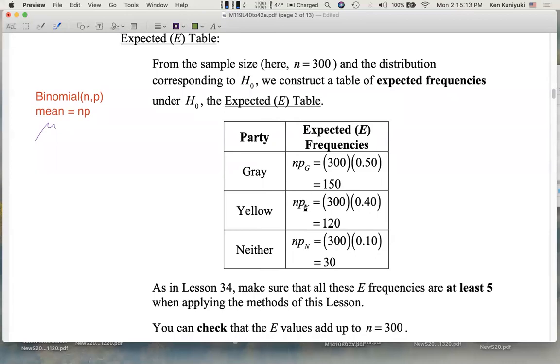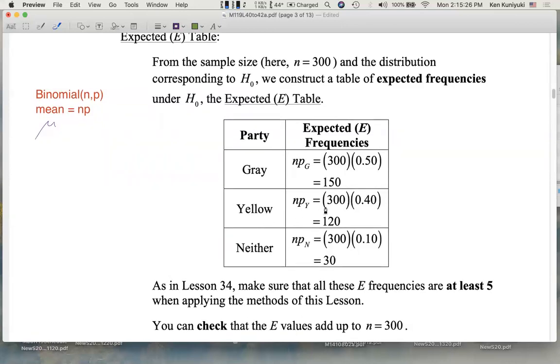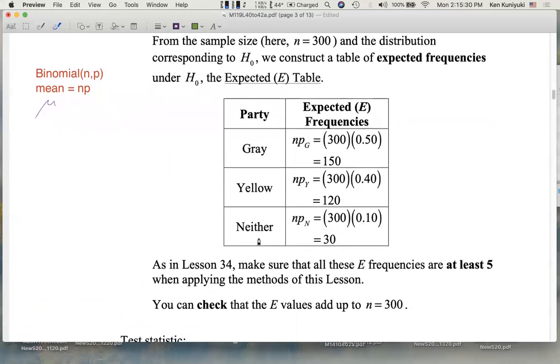Now here, we have three expected frequencies. For the Gray Party, it's npg, 300 times 0.50, or 150. For Yellow, 120. For Neither, it is np sub n, which is 300 times 0.10, or 30.